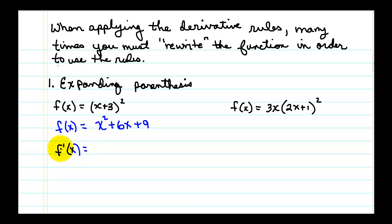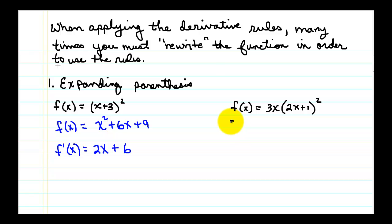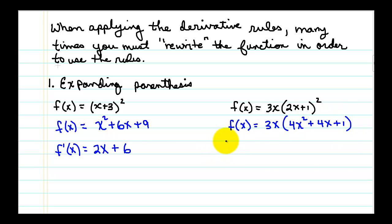Once expanded, for example to x squared plus 6x plus 9, it's in a format we can differentiate. Now we apply the rule, so the function becomes f prime. Using the power rule we get 2x to the first power, and 6x to the zero power which is just 6, so the derivative is 2x plus 6. In another example with two terms multiplied together times a polynomial, we first FOIL to get 4x squared plus 4x plus 1, then distribute to get 12x cubed plus 12x squared plus 3x.